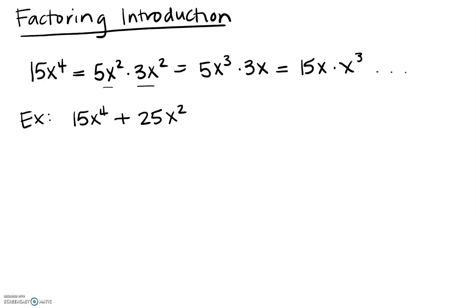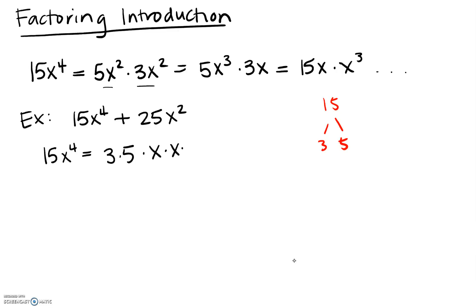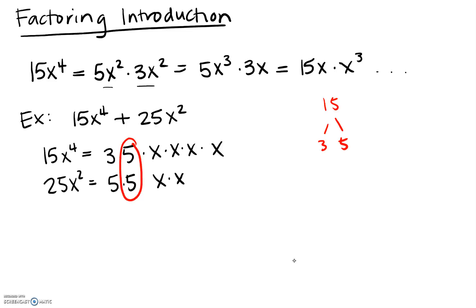When factoring a polynomial, our goal is usually to pull out the greatest common factor. One way to do this is by using prime factorizations. For 15x to the fourth: 15 breaks down into 3 times 5, and x to the fourth is x multiplied together four times. For 25x squared: 25 is 5 times 5, and x squared is x times x. Looking at both prime factorizations, these two terms have a 5 in common and two x's in common.